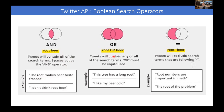If we want tweets that include either of these words — either 'root' or 'beer' — we use the boolean operator OR. You have to explicitly include it in your search criteria, and you need to capitalize OR, so the character O-R has to be capitalized. Otherwise, Twitter will think it's another search keyword. So when you type 'root space OR capitalized space beer,' it will return tweets containing any or all of the search terms. Examples: 'this tree has a long root' — has the keyword root. Or 'I like my beer cold' — has the keyword beer, but not root, which is fine.